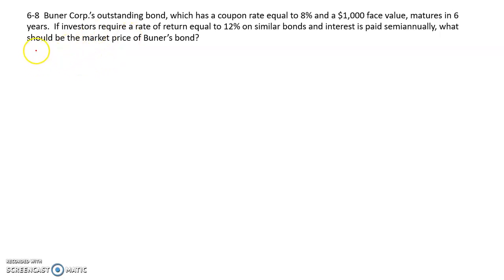Okay, so CFIN 6, Chapter 6, Problem 8. Buhner Corp's outstanding bond, which has a coupon rate equal to 8%, $1,000 face value, matures in 6 years. Investors require a rate of return equal to 12% on similar bonds and interest is paid semi-annually. What should be the market price of Buhner's bond?